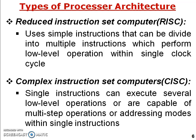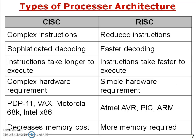Complex Instruction Set Computers (CISC) allow a single instruction to execute several low-level operations, or are capable of multi-step operations or addressing modes with a single instruction, giving it more features than RISC. The slide shows a comparison: CISC has sophisticated decoding while RISC has fast decoding; RISC instructions take longer to compile but execute faster; CISC has complex hardware requirements while RISC has simple hardware requirements.